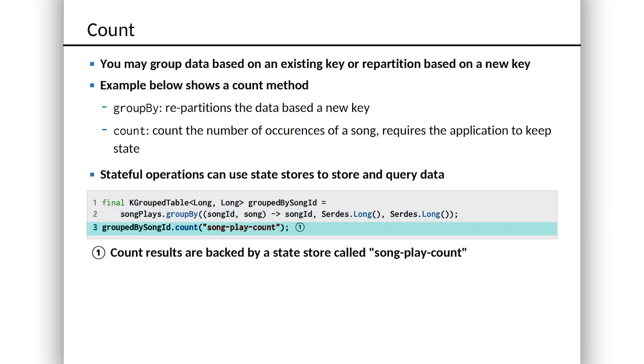That new KGroupedTable exposes a new method called count, and this is going to allow us to count the unique occurrences of each key. Count seems simple enough — here's this grouped table, go ahead and count the things. You might wonder why we have to pass in a parameter. That's the name that this piece of state should have in the internal state store. This is a stateful operation, and that's fairly intuitive. Counting means we're going to look at things as they come in, maintain this group table and update counts — there's something that's going to be held in memory. There's state in this node to get this job done.